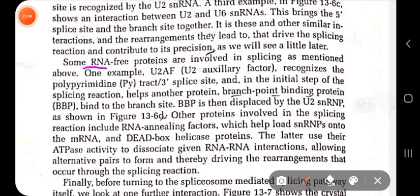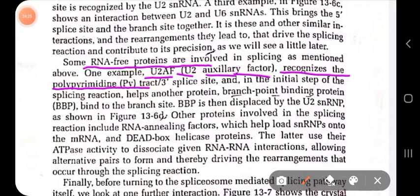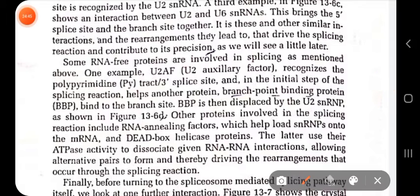Some other RNA-free proteins are also involved in splicing. One example is U2AF — U2 Auxiliary Factor — another protein found within the spliceosome complex. U2AF recognizes the polypyrimidine tract found at the three prime splice site. In the initial step of the splicing reaction, it helps another protein called branch point binding protein (BBP) to bind to the branch site.